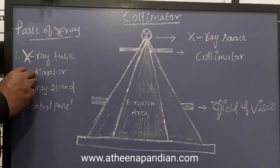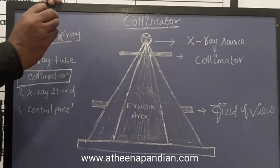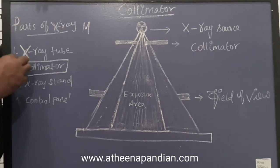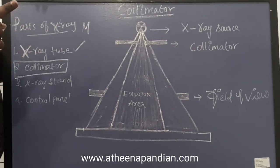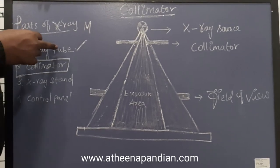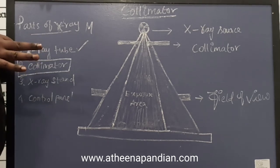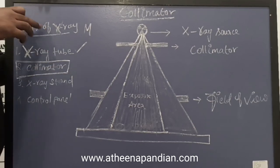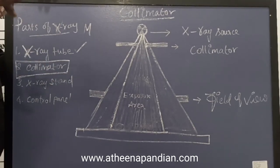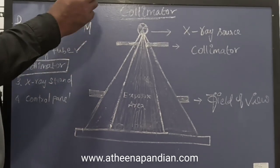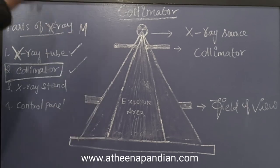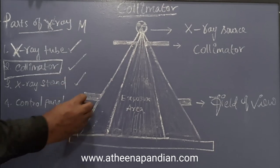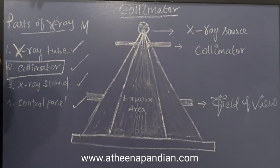Today we are going to see the device called collimator. The X-ray machine is composed of four particular areas. One is the X-ray tube, which is helpful for producing X-ray. In the last video we have seen what is happening inside the X-ray tube. Those who have missed that video can find it in the description. Once the X-ray tube produces X-ray, the X-ray comes to the collimator, then to the stand, and then to the control panel. All these parts we are going to see later on.